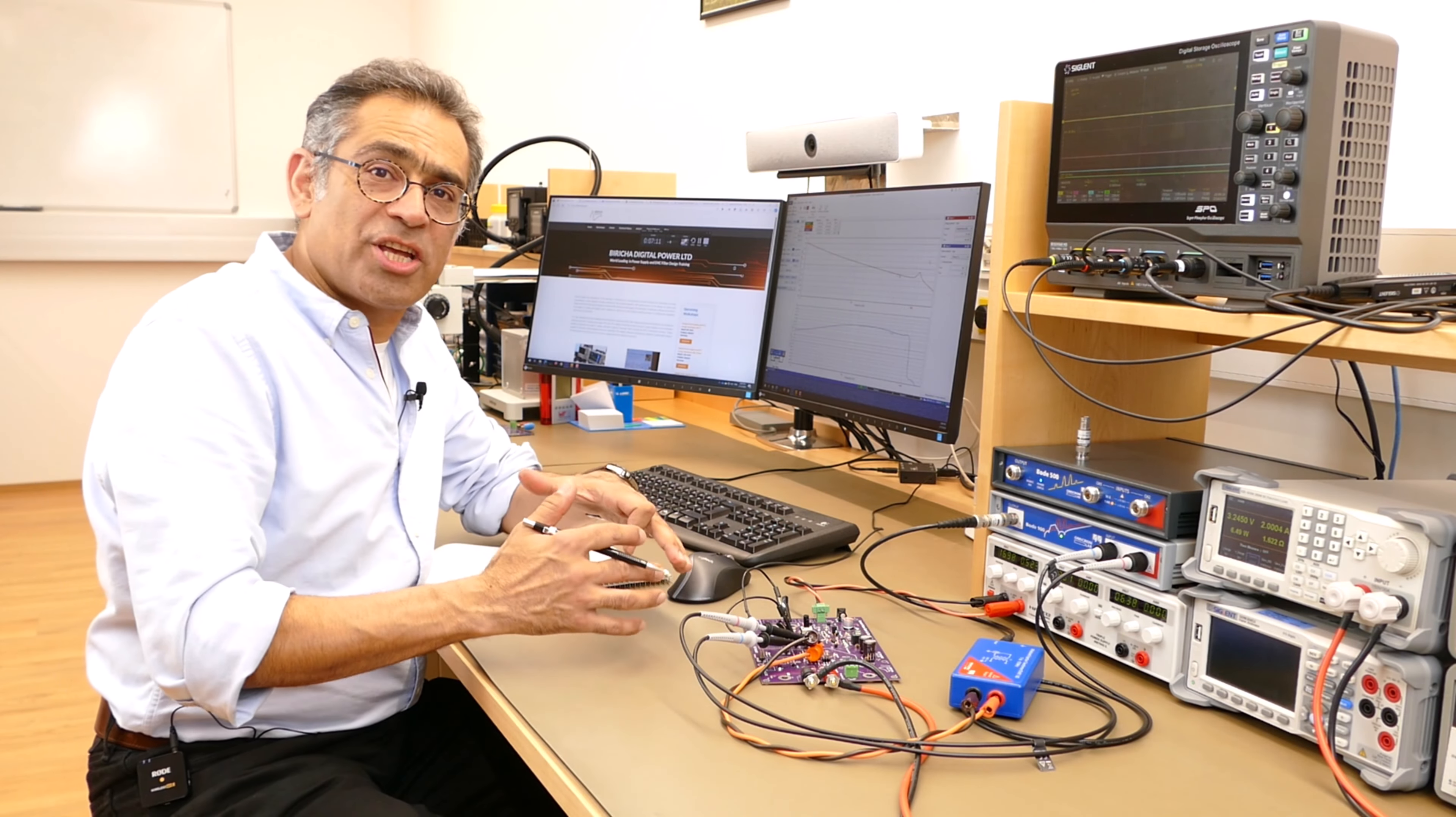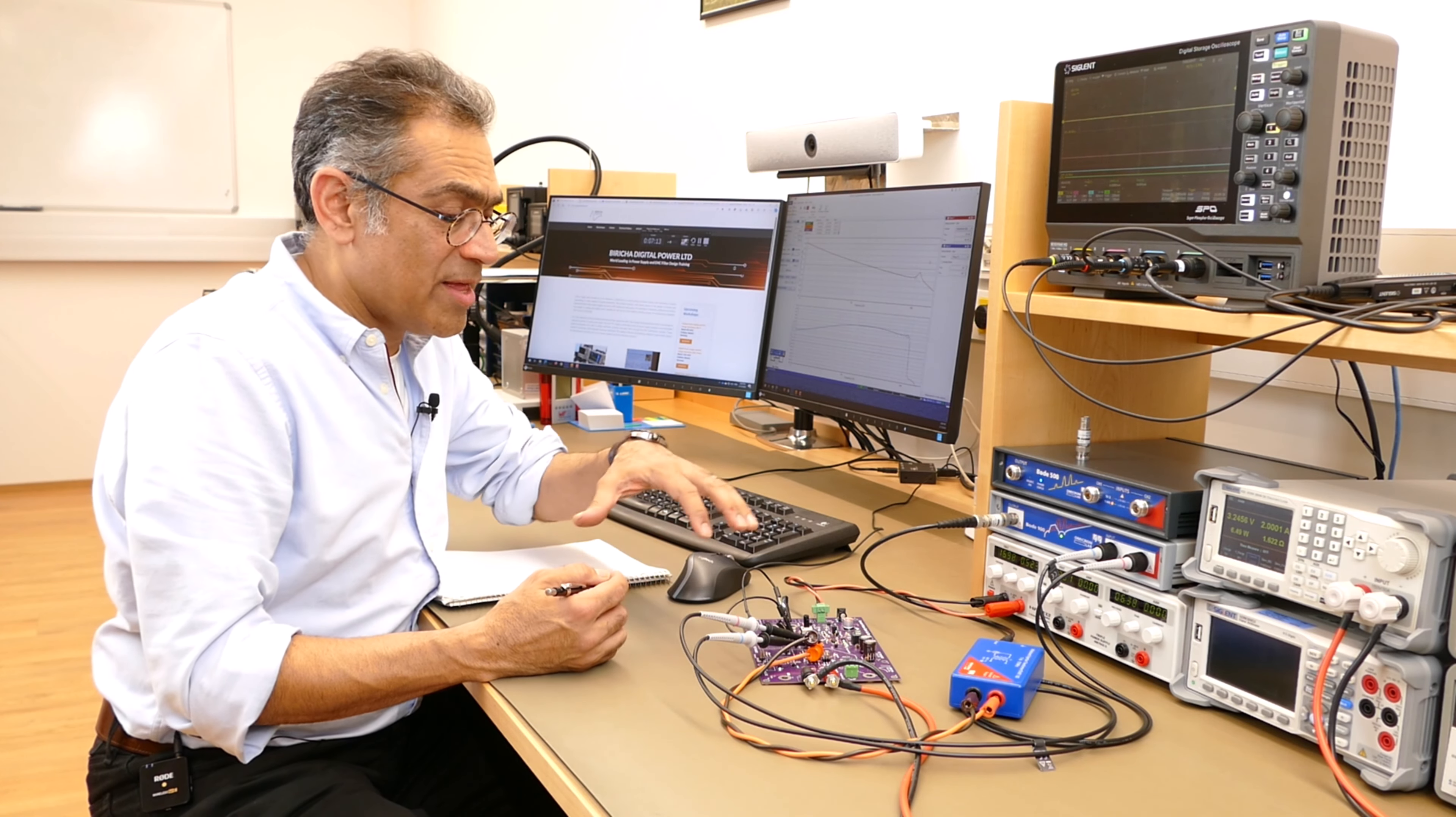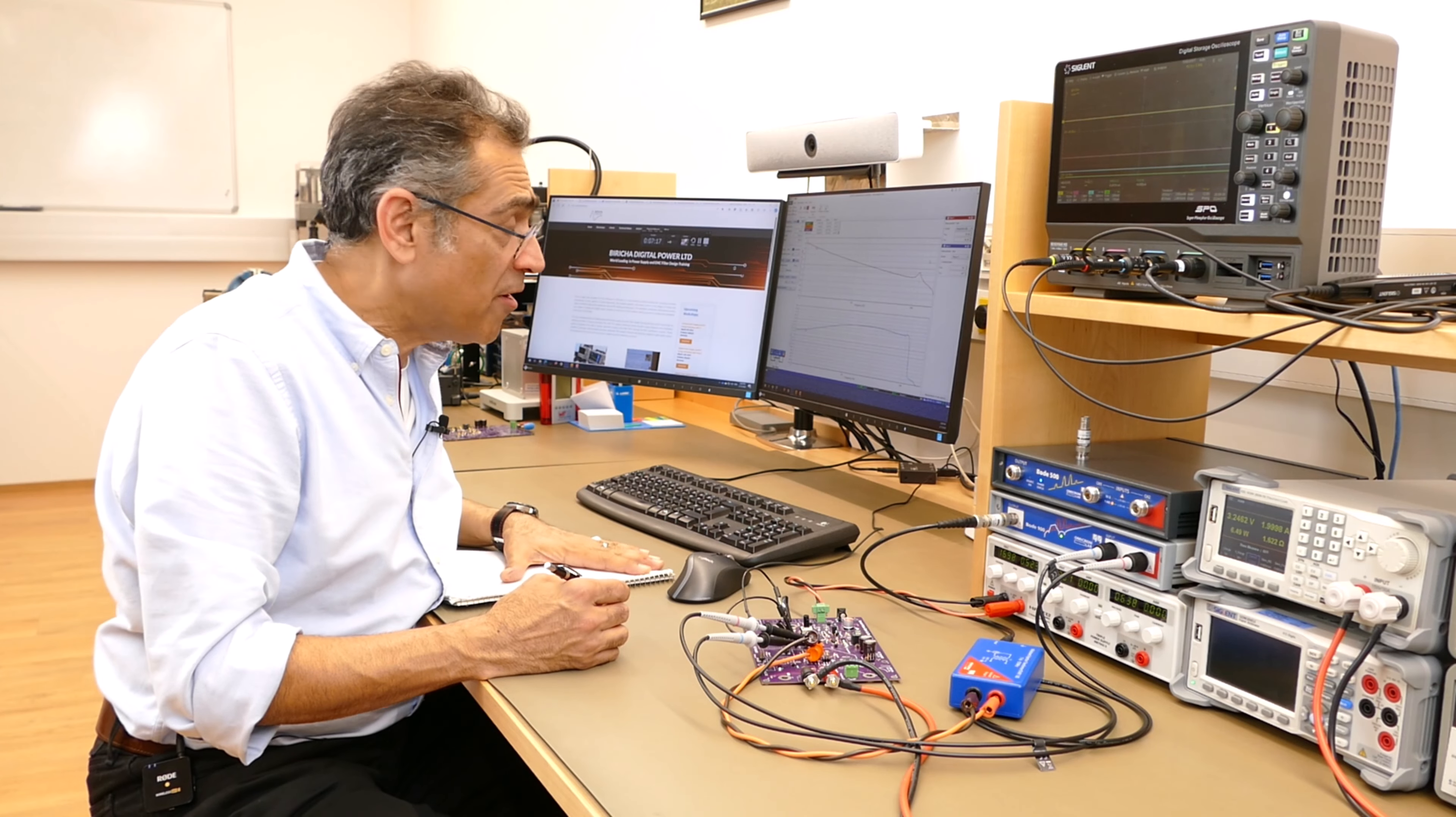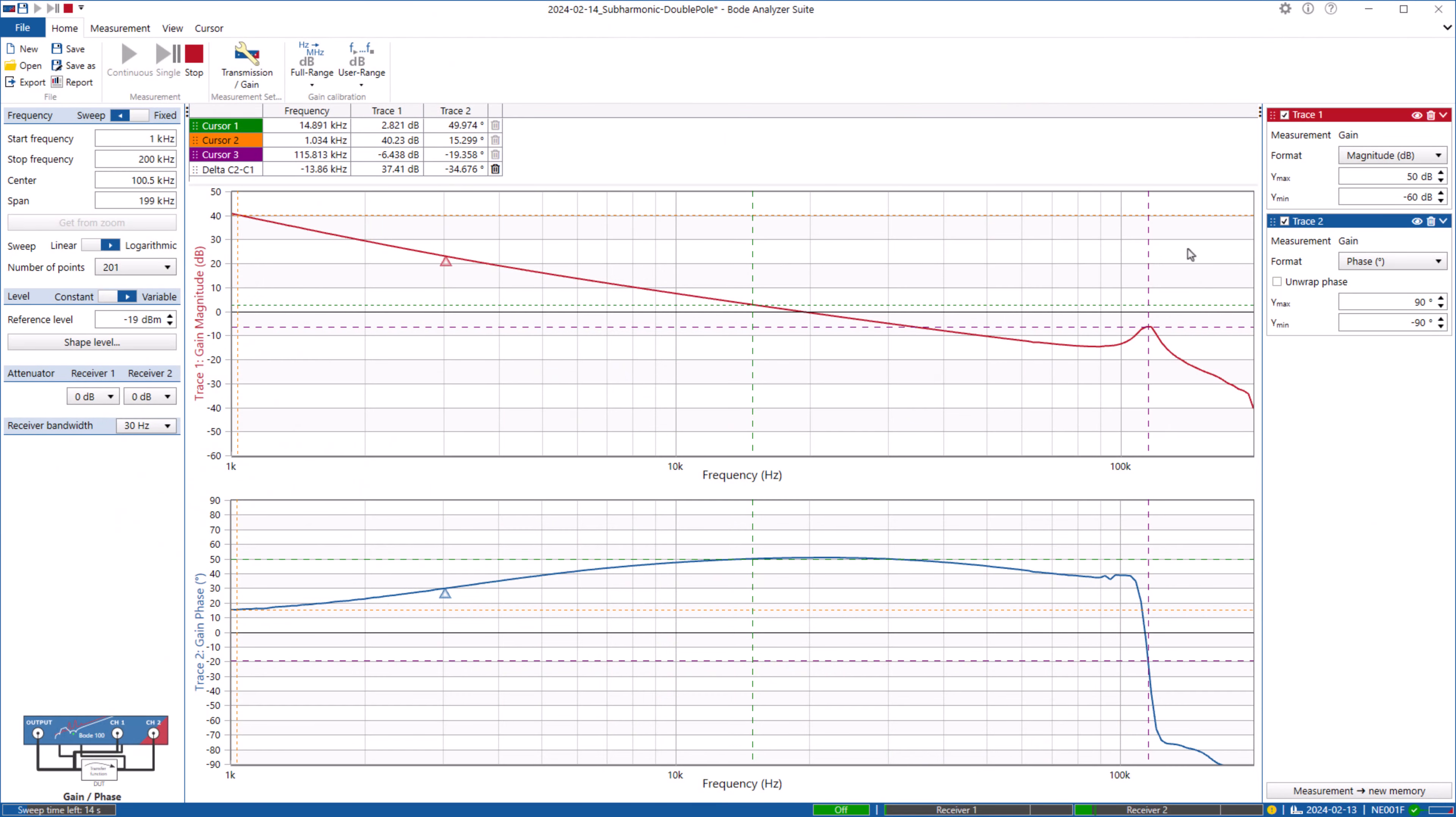So I've just quickly changed the setup so that we measure the frequency response. I've taken the oscilloscope off. And now we are looking at the frequency response of the total loop. And you can see that it's coming down.